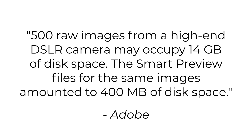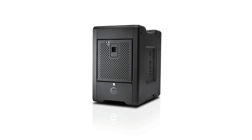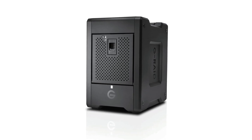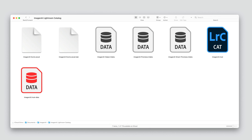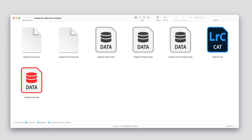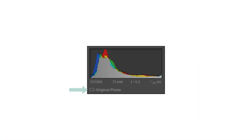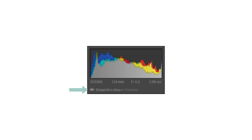By using Smart Previews, your original RAW files can live on an external drive while your Smart Previews live on your internal SSD. With your external drive disconnected, you can edit, apply attributes, and practically do anything to your photos within Lightroom as if the drive was connected. Smart Previews also help speed up your processes in Lightroom because everything you do is on a smaller version of your original.